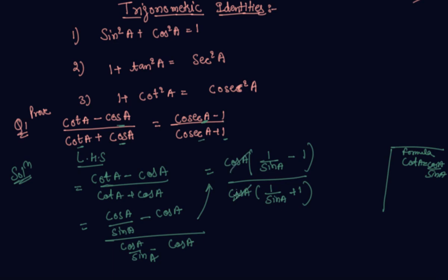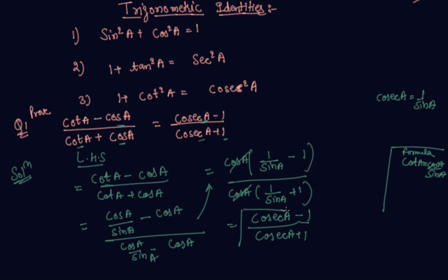The cos(a) terms cancel out, and since 1/sin(a) = cosec(a), this comes out to be cosec(a) minus 1 upon cosec(a) plus 1 — which is exactly what we had to prove. So LHS is equal to RHS. I hope you guys are clear now.